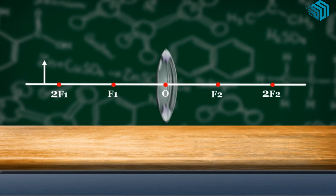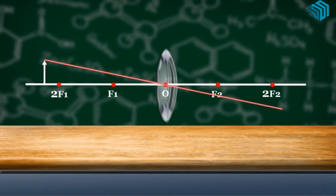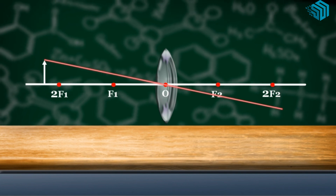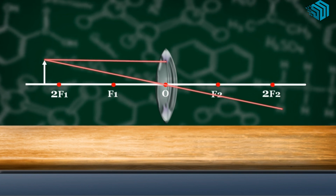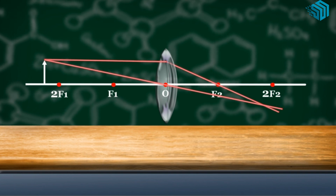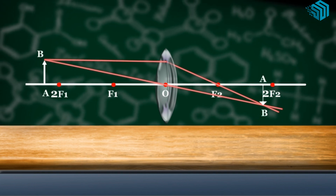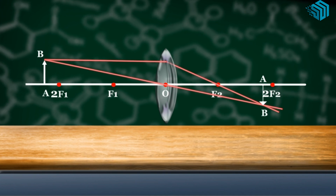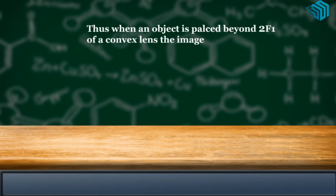When the object is placed beyond 2F1: a ray passes through the optical center without any deviation, and a ray parallel to the principal axis after refraction passes through F2. The refracted rays intersect at a point between F2 and 2F2. The image formed is between F2 and 2F2 — real, inverted, and smaller than the object.